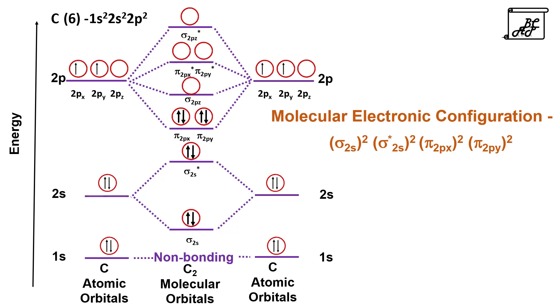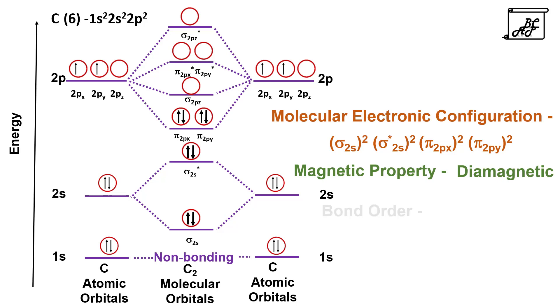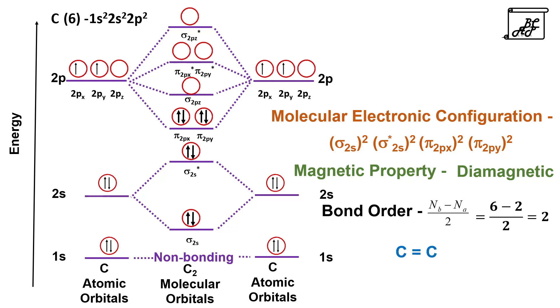The molecular electronic configuration is sigma 2s², sigma star 2s², pi 2px², and pi 2py². As there are no unpaired electrons, the carbon molecule is diamagnetic in nature. The bond order is calculated as 2, meaning carbon is diatomic with two bonds between the two carbon atoms.